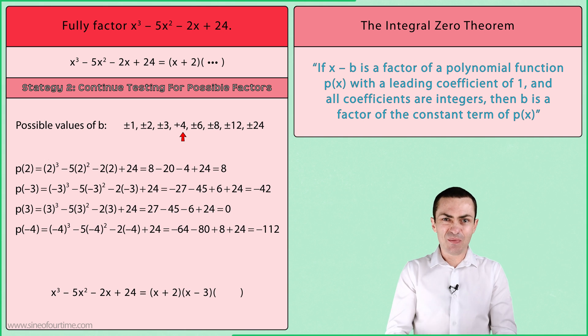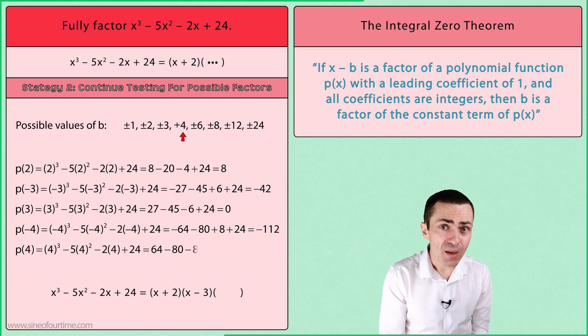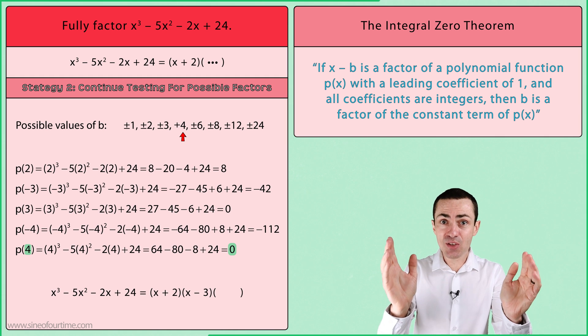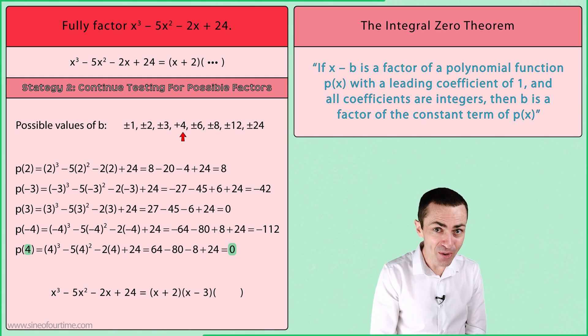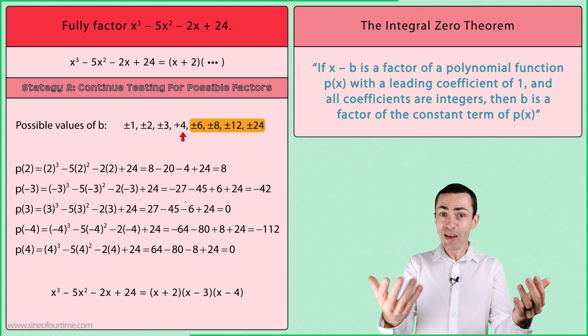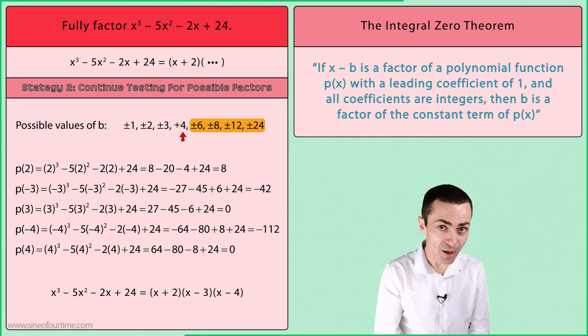So on we go by testing -4. No luck. And then positive 4, which is equal to 0, which tells us that the value of b is 4, and that x - 4 is a factor of this polynomial. At this stage, there is no need to test the remaining values since we have found all of the factors of this polynomial.